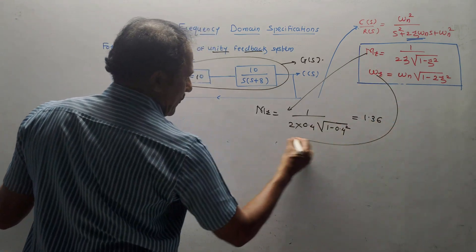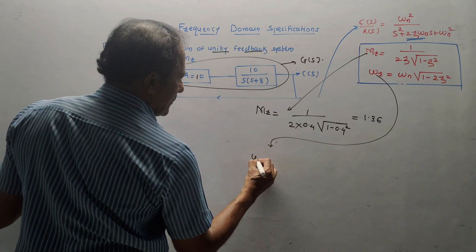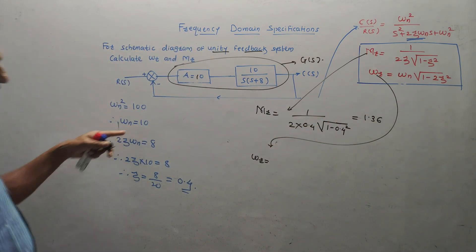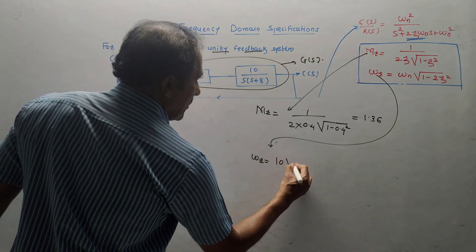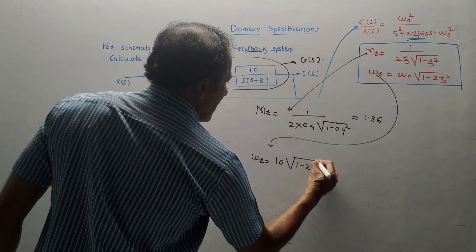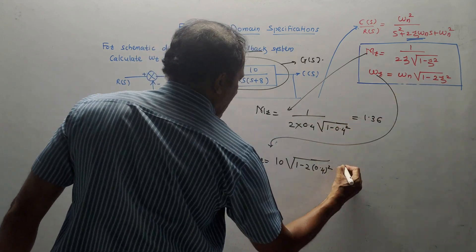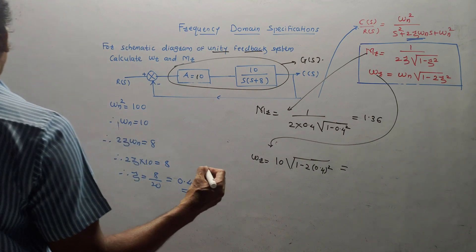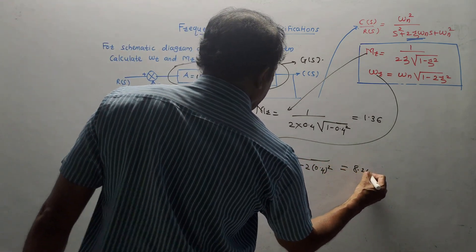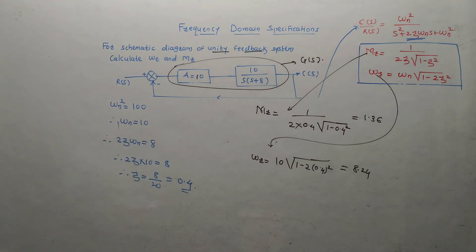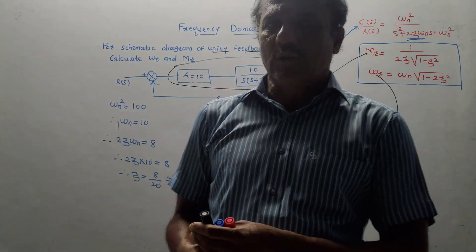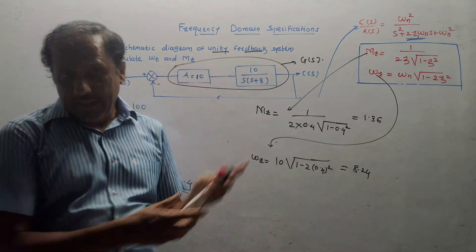For ωr, using the formula ωr = ωn√(1 − 2ζ²): ωn = 10, so it is 10 × √(1 − 2 × 0.4²). Therefore ωr equals 8.24 radians per second. These are the answers related to the given numerical — the values of ωr and Mr.